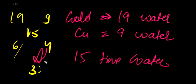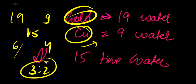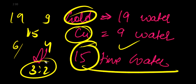So here we have 3 ratio 2, so 3 ratio 2 means 3 parts of gold and 2 parts of copper. So the alloy will be 15 times heavier than water.